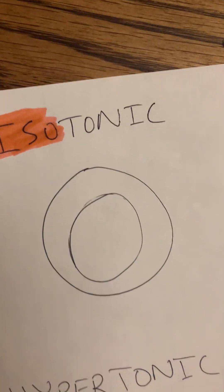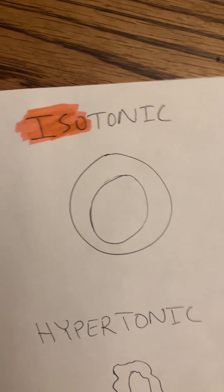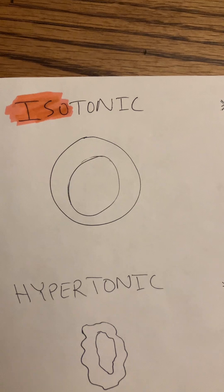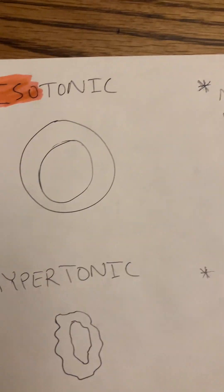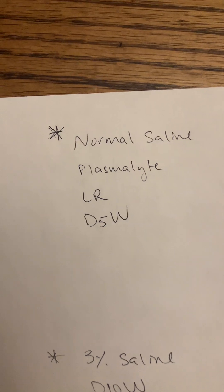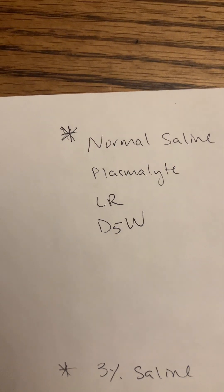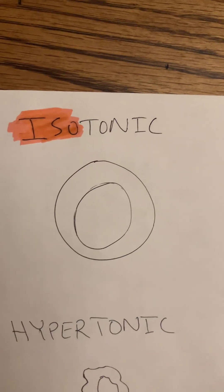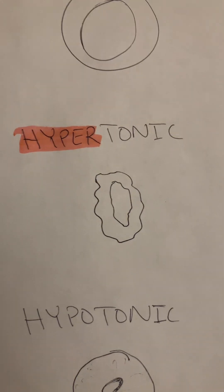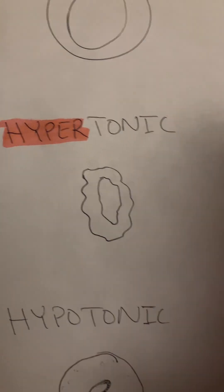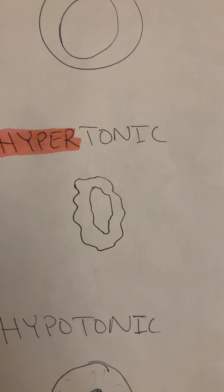With an isotonic solution, the water composition stays the same inside and outside the cell. This is to help with fluid volume, so things like normal saline, plasmolyte, LR, and D5W are all examples of an isotonic solution. Your cell is going to maintain its shape.